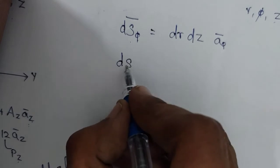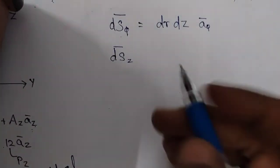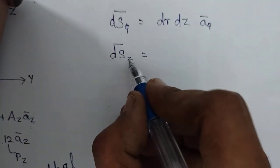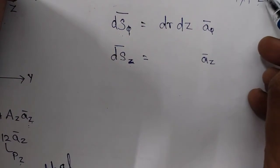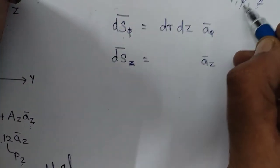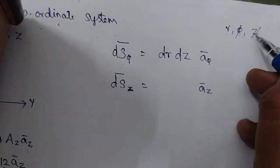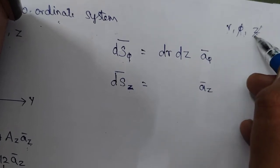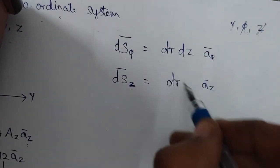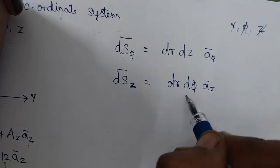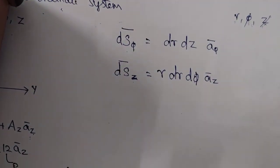The last vector surface area is DSZ vector. Z is in the subscript, so the unit vector is az. Canceling z leaves r and phi as the remaining variables. dφ does not come alone — it always comes with r. So DSZ vector = r·dr·dφ·az. This is the differential vector surface area normal to the z direction.